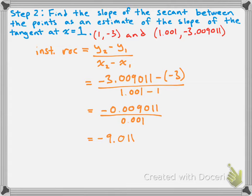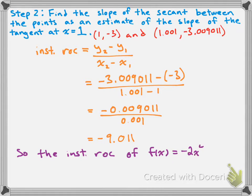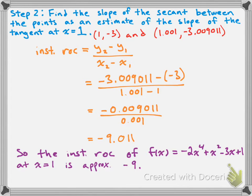As a final statement: the instantaneous rate of change of f(x) = -2x⁴ + x² - 3x + 1 at x = 1 is approximately -9. Hope that's useful to you guys. Take care.